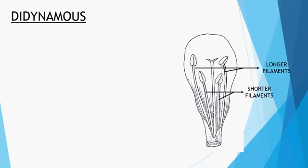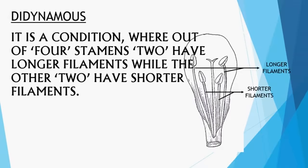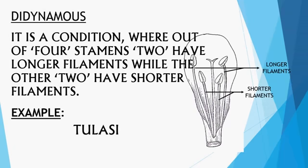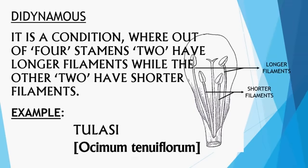The first type is didynamous. In this condition, out of four stamens, two have longer filaments while the other two have shorter filaments. In the photograph, four stamens are present, with two having longer filaments and two having shorter filaments. This condition is called didynamous. Example: tulasi, a medicinal plant with the scientific name Ocimum tenuiflorum.